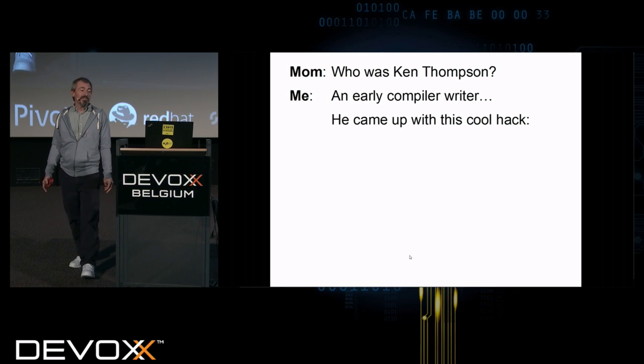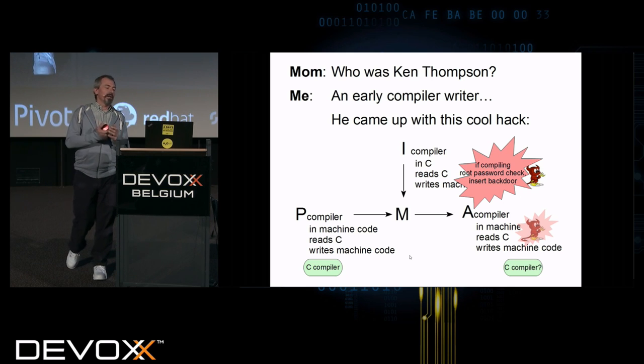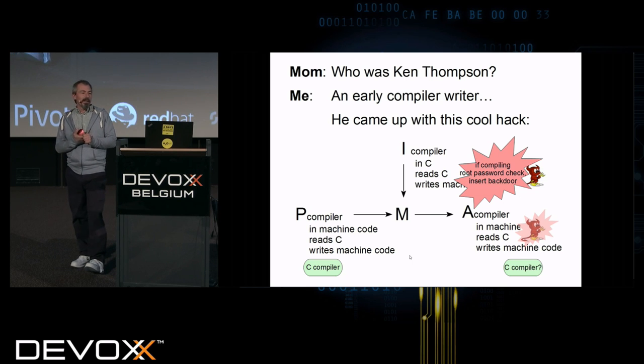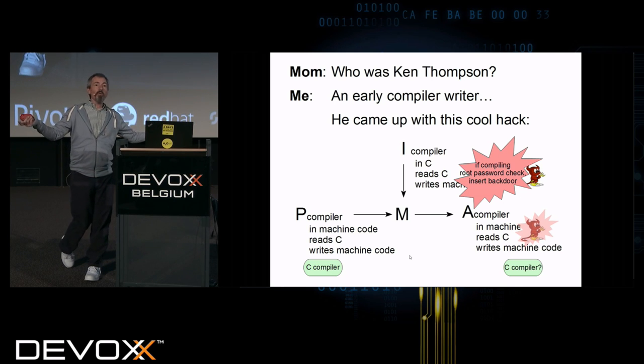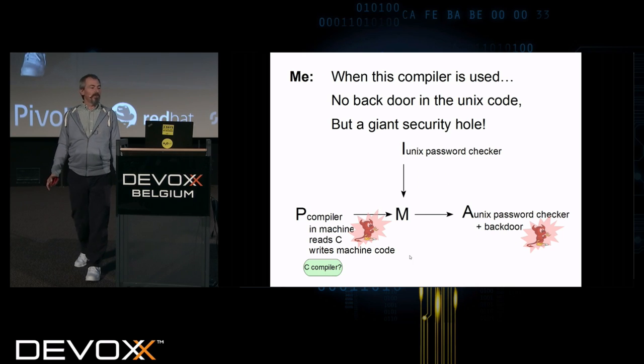Well, he was an early compiler writer and he came up with this really cool hack. He said, suppose I have this bug I wrote into the source code. And the bug is kind of special. It says, if I see that I'm compiling the root password checker, insert a secret backdoor so I can log into every Unix machine on the planet. And the output of compiling this is another compiler that looks for all the world like a C compiler. It does all the things you expect a C compiler to do except that it has a bug in it that when it compiles the Unix source code, the password checker has this secret backdoor. And now I can break into any Unix machine on the planet. A giant security hole.